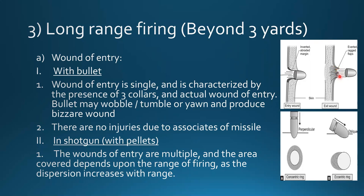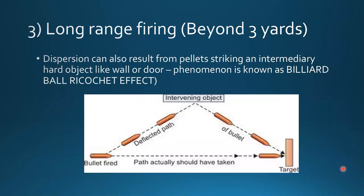The entry wound is inverted in long range firing and the exit wound has ragged flaps. If the missile enters perpendicularly it produces a concentric ring or round shape; if entering obliquely or tangentially, an eccentric ring may be seen. Beyond three yards dispersion can occur, and pellets may also strike an intermediary hard object like a wall or door — this is known as the billiard ball ricochet effect.